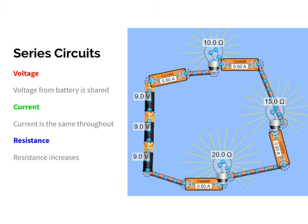When we talk about series and parallel circuits, we are focusing mainly on the components within the circuits, not including the batteries. We did talk about series batteries and parallel batteries and what that does to the voltage. The difference between series and parallel is how they are arranged, and based upon that arrangement, the circuit is going to affect the voltage, the resistance, and the current.